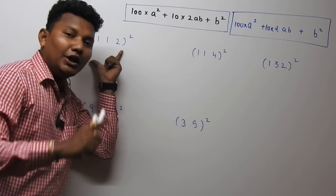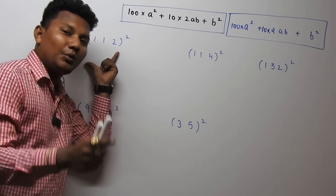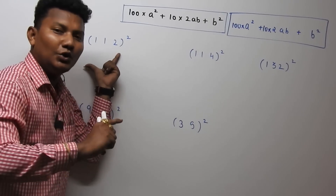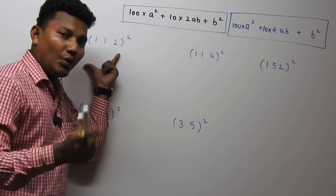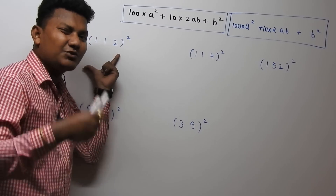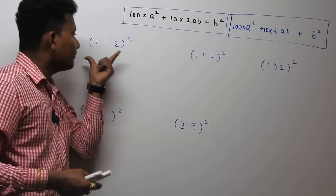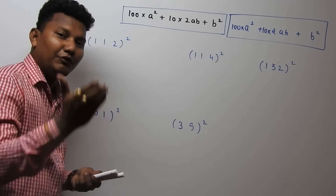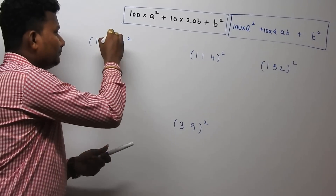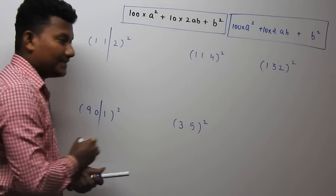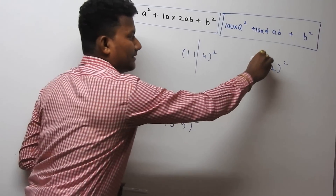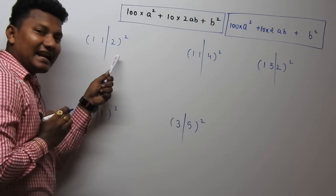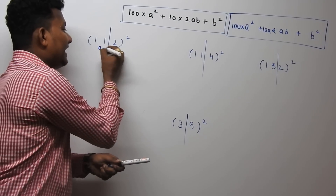For example, if you want to find the square of 112, break the number before the unit place. So this gives a left-hand side and a right-hand side. Consider the left-hand side as a and the right-hand side as b.